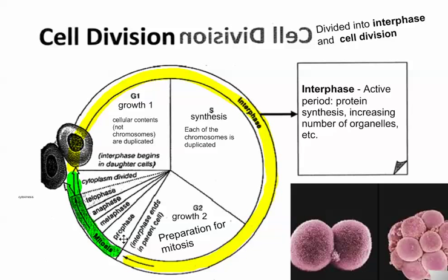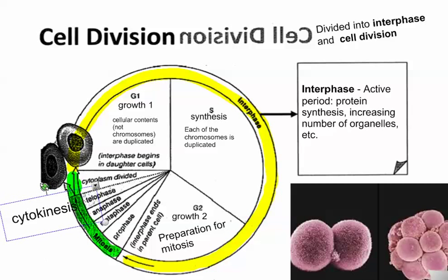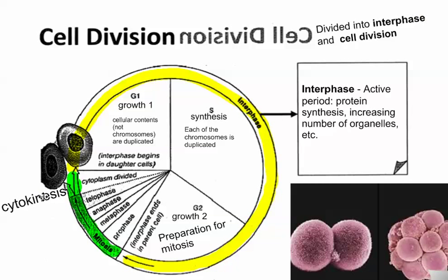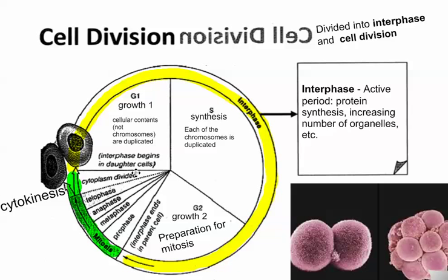G2 — Growth Two phase — is preparation for mitosis, which we'll treat separately. The stages of mitosis are prophase, metaphase, anaphase, and telophase — there's a nice acronym to help you remember those. At the end of telophase, the cytoplasm is divided, and while some people consider this separate from mitosis, there's a fancy name for dividing the cytoplasm: cytokinesis.